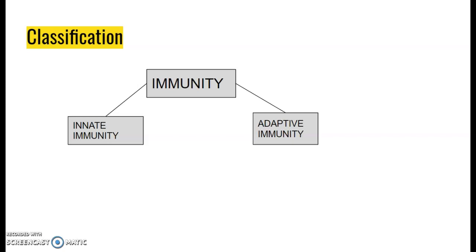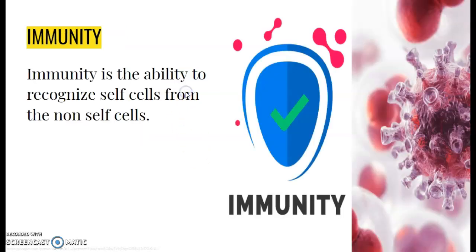When we move on with the classification, immunity can be classified broadly as innate immunity and adaptive immunity. Immunity, as we know, is the ability to recognize self-cells from non-self-cells.